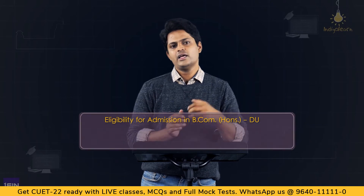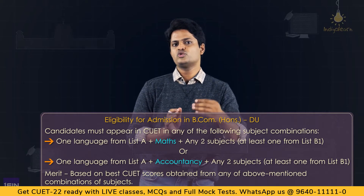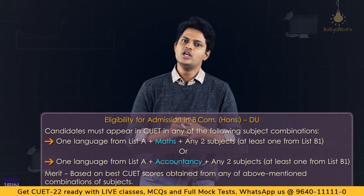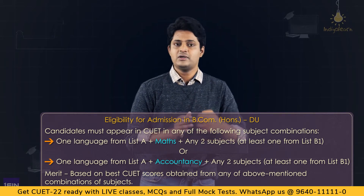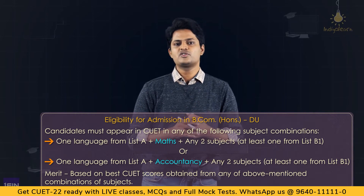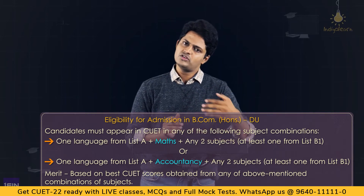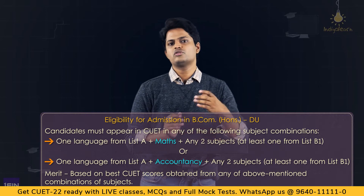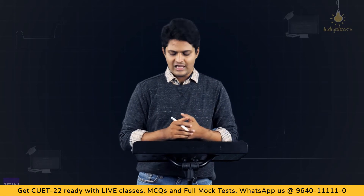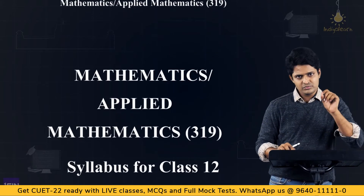For example, if you are opting for BCom in Delhi University, in the domain subjects you have to choose either accountancy or mathematics as one of your mandatory subjects. If you choose mathematics, our commerce combo course will help you, as mathematics preparation will simultaneously go hand in hand with your other sections.